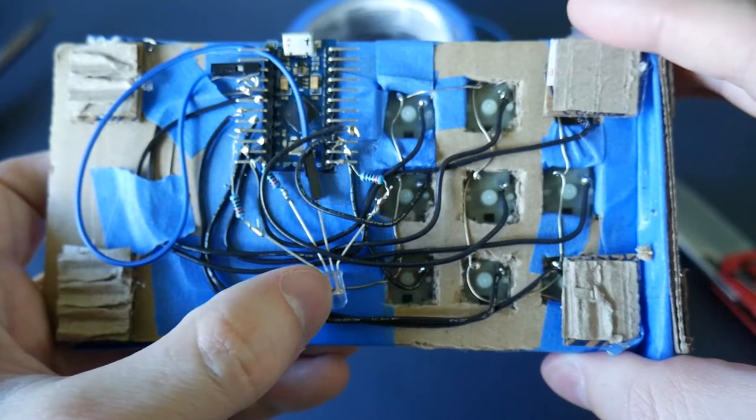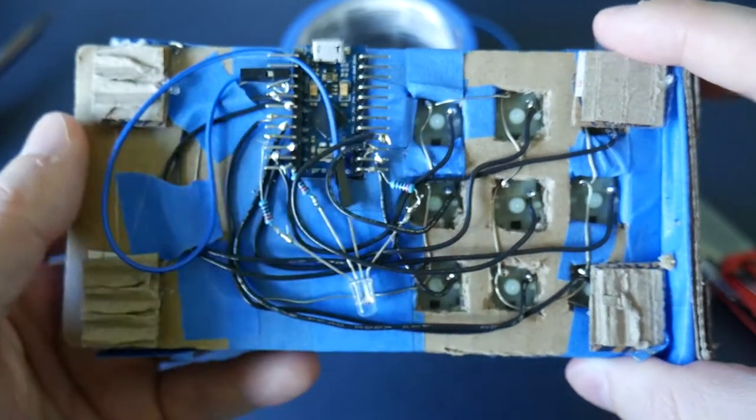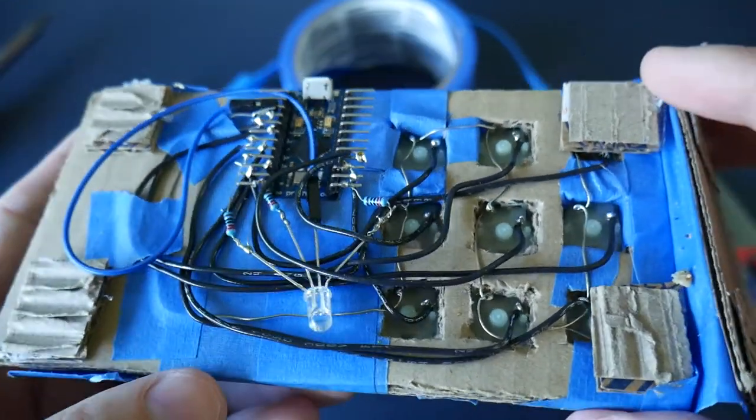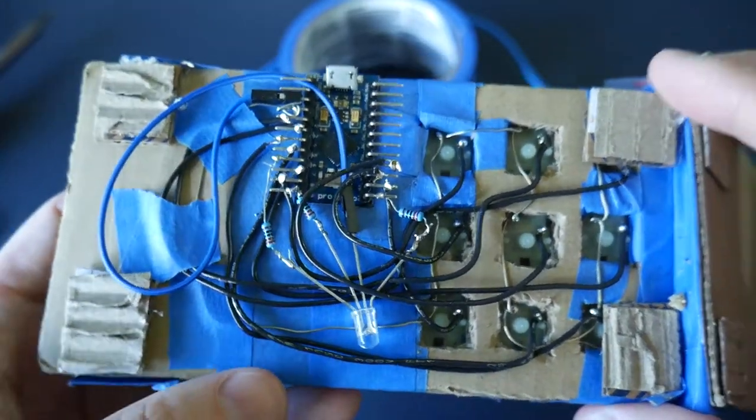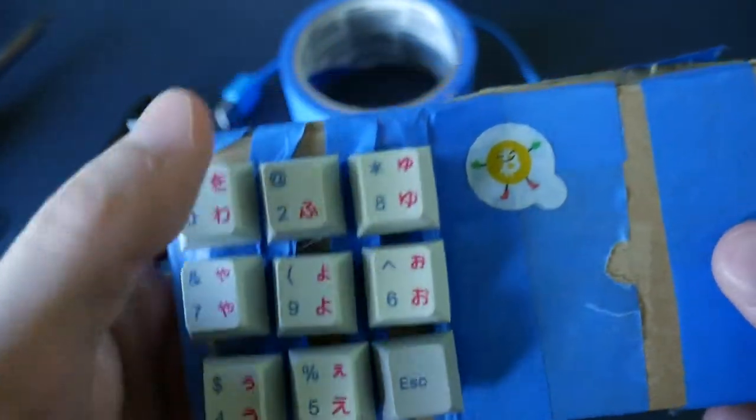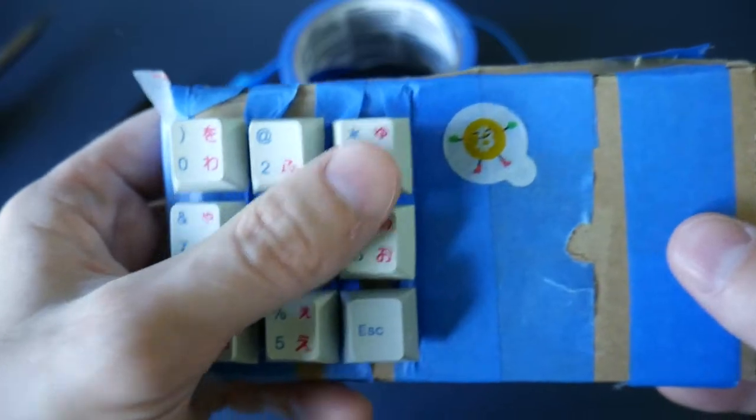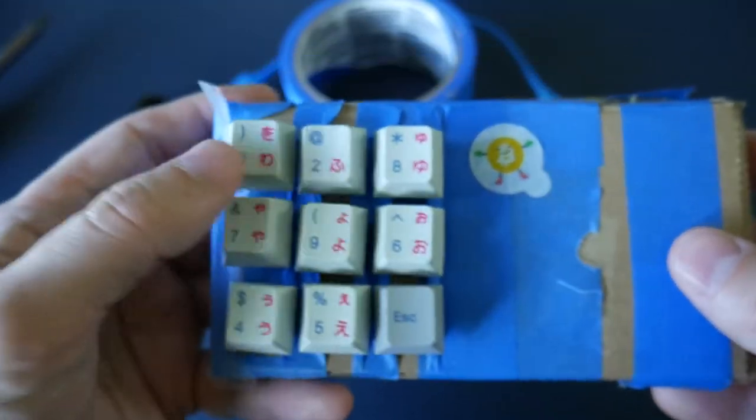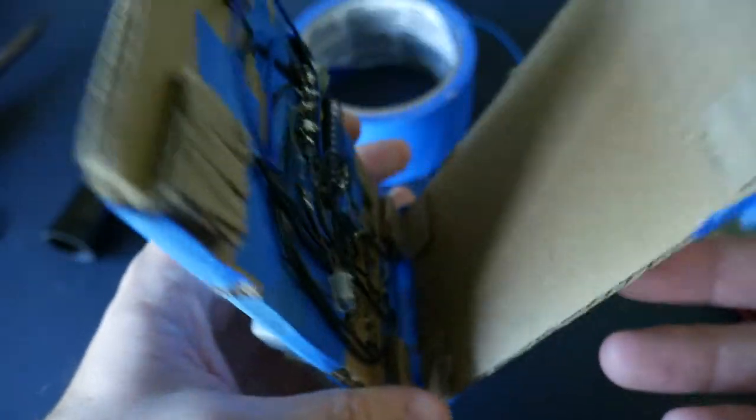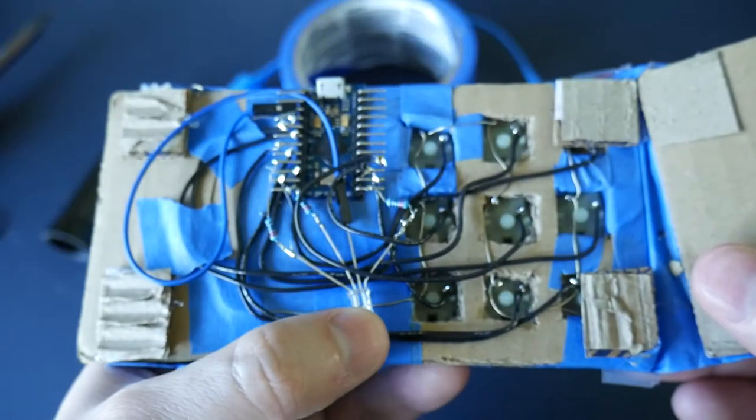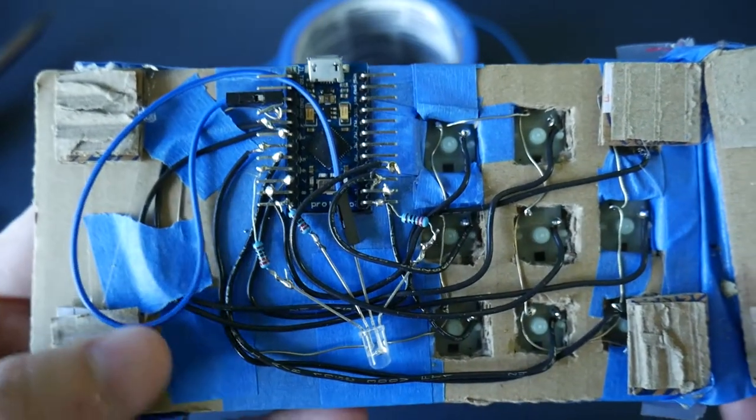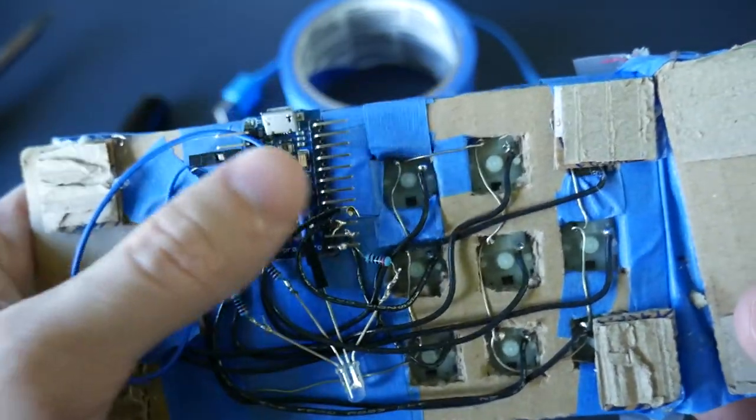So basically, what this is, is I wanted to have like different sets, or what do you call them? Basically, you could press this escape button and then you could change the functions of all these, so you could have like four different sets. Or really, you could have as many as you want, but I really only end up using two, but it would be denoted by a different color from this RGB bad boy right there, which keeps going in and out of.